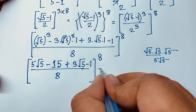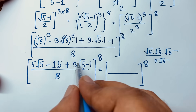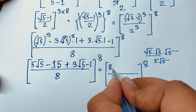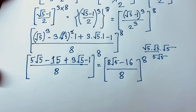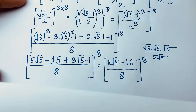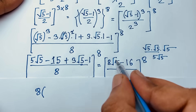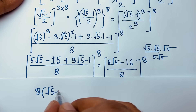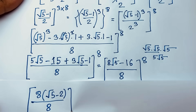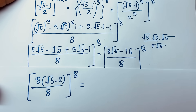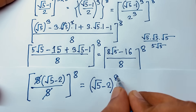Combining like terms: 5 square root 5 plus 3 square root 5 equals 8 square root 5, and minus 15 minus 1 equals minus 16. So the numerator is 8 square root 5 minus 16 over 8. Factoring out 8: 8 times (square root 5 minus 2) over 8. The 8 cancels, giving us (square root 5 minus 2), whole to the power 8.